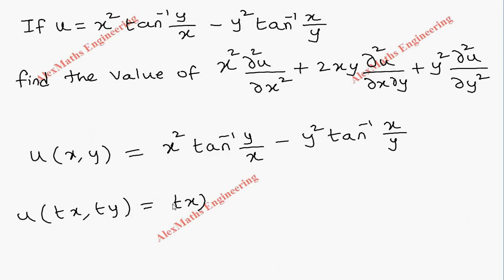So this becomes tx whole square times tan inverse of ty by tx, minus ty whole square times tan inverse of tx by ty. We can cancel wherever t is possible. After cancelling, let's see the first term.